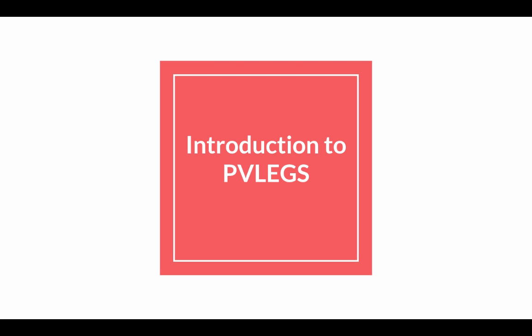So that is your introduction to PVLEGS. P is for poise, V is for voice, L is for life, E is for eye contact, G is for gesture, and S is for speed. Remember those as we go through this unit on speech.